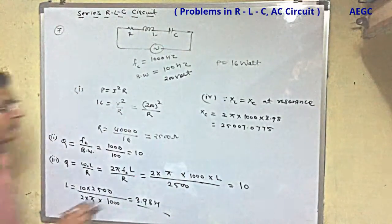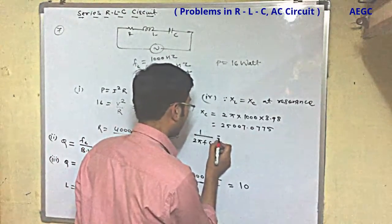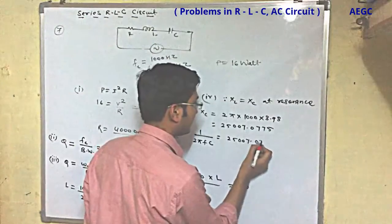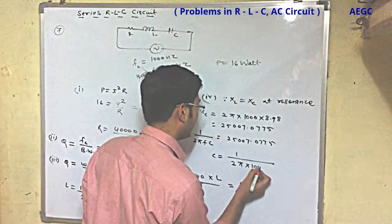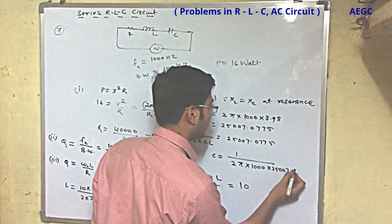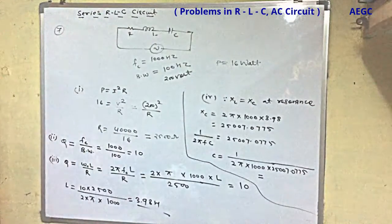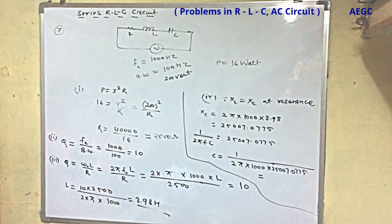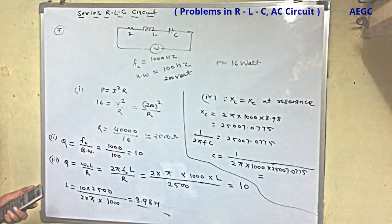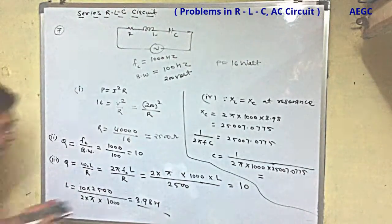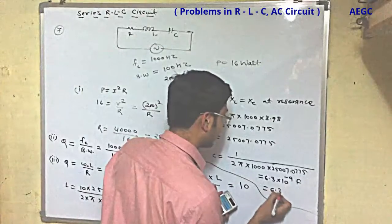We need C. XC = 1/(2π f C). This value is 25000.0775. So C comes out to be 1 divided by 2π × 1000 × 25000.0775, which equals 6.3 × 10⁻⁹ Farad. This is equal to 6.3 nanofarad.